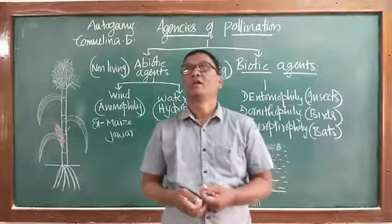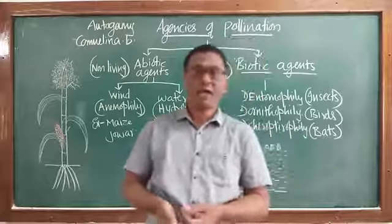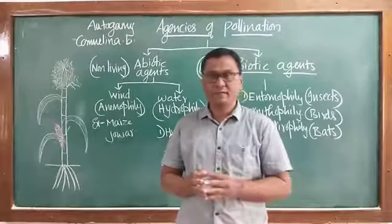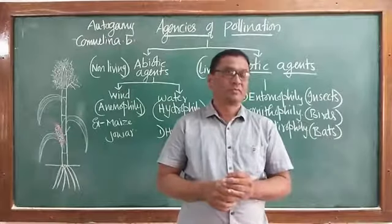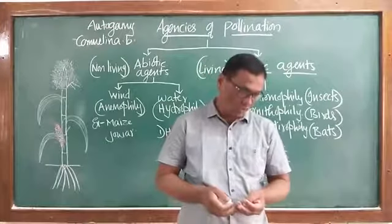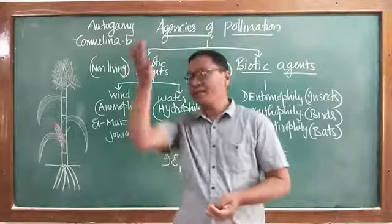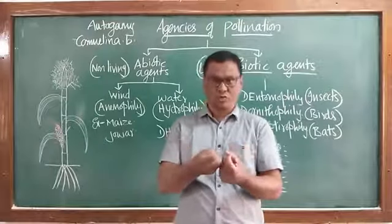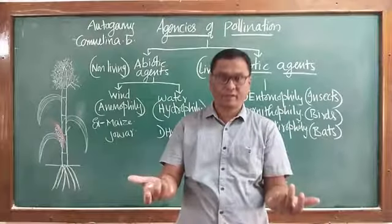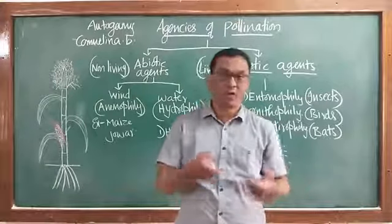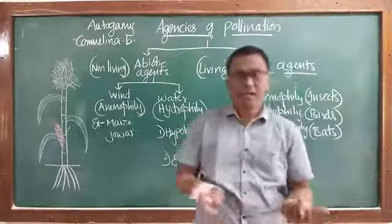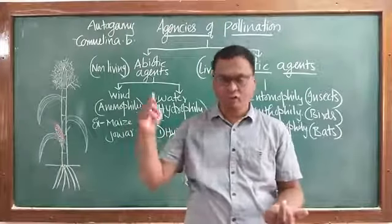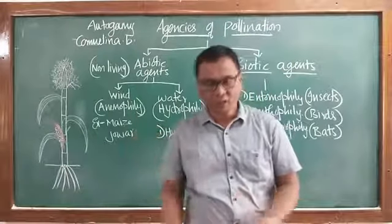One kind is chasmogamous flowers and the other is cleistogamous flowers. The flowers produced on the branches that arise above the soil surface are chasmogamous flowers — these are normal opening or blooming flowers. In chasmogamous flowers, the calyx, corolla, androecium and gynoecium are totally exposed to the environment, and self-pollination can occur in those flowers as well.